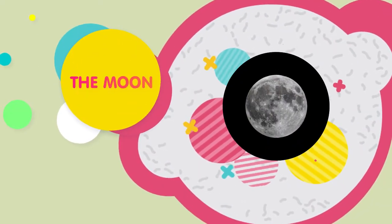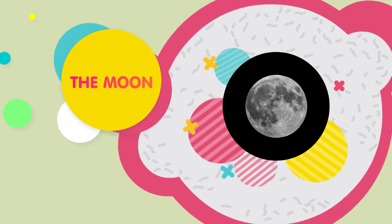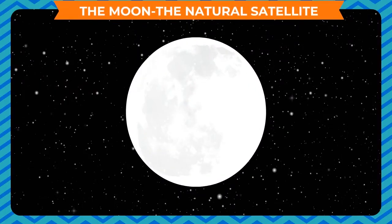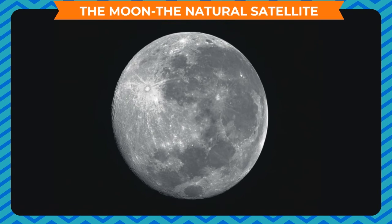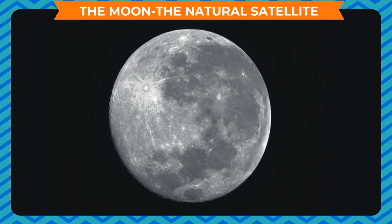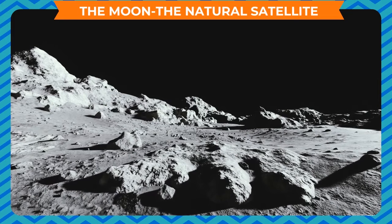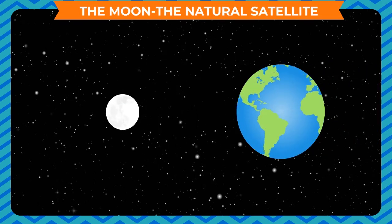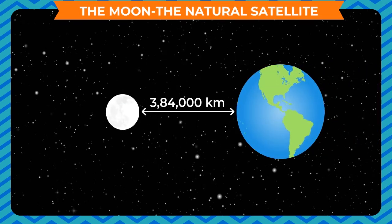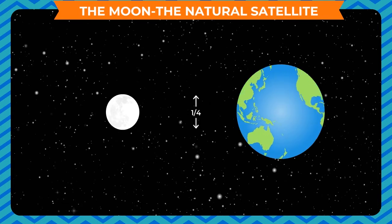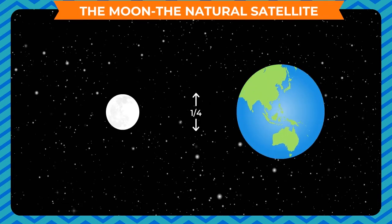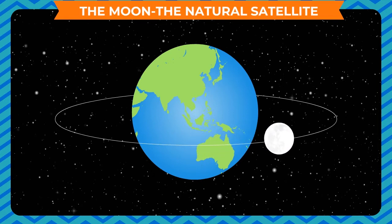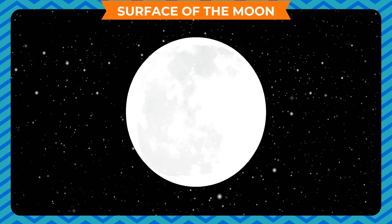The moon is a spherical heavenly body in the solar system. It is made of rocks and has no atmosphere on it. It is the only natural satellite of the earth in the solar system. The moon is about three lakh eighty-four thousand kilometers away from the earth and is about one-fourth the size of the earth. It revolves around the earth in a fixed orbit.